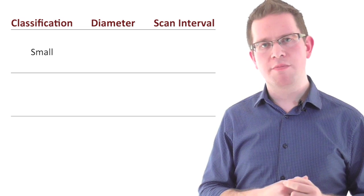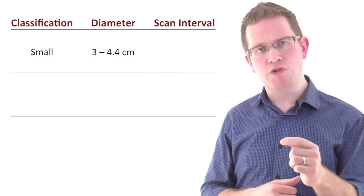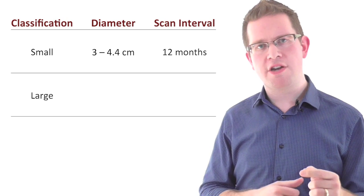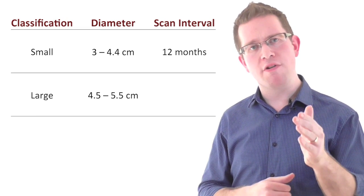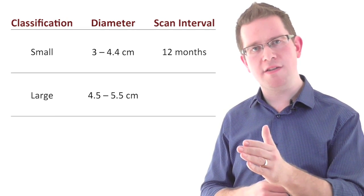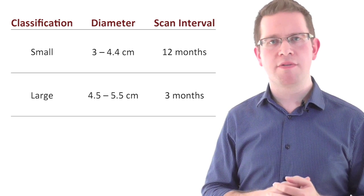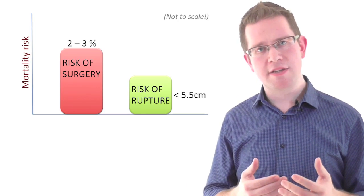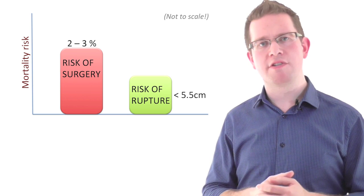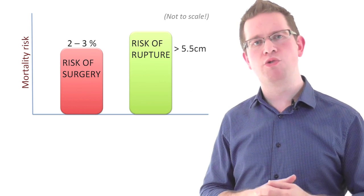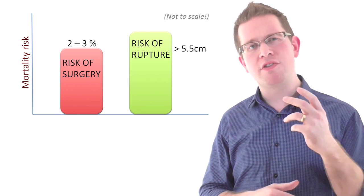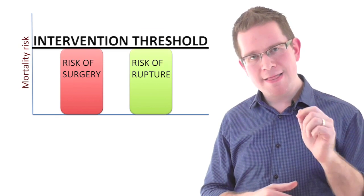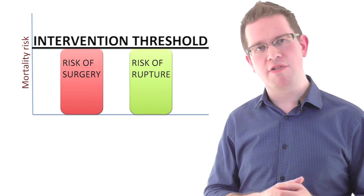Small aneurysms are those measuring between 3 and 4.4 cm and these should be scanned annually. Large aneurysms are those measuring between 4.5 and 5.5 cm and these should be scanned every three months. Once a AAA reaches 5.5 cm in maximal diameter, the 2-3% annual risk of rupture begins to outweigh the mortality risks associated with surgery and we start to consider offering prophylactic AAA repair. This is known as the intervention threshold.